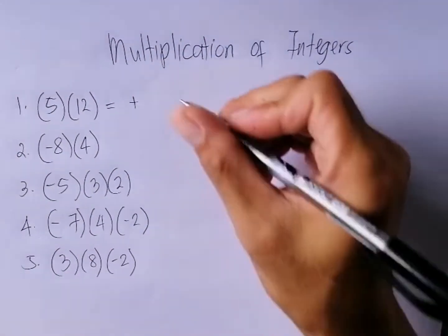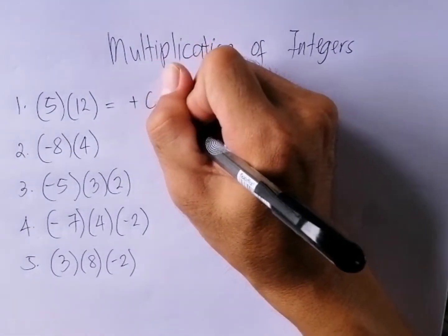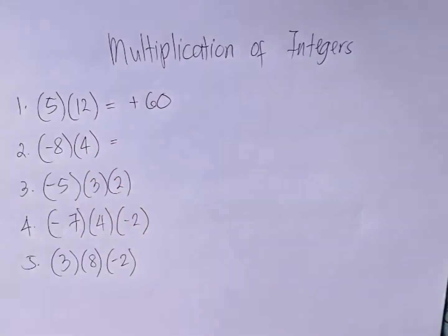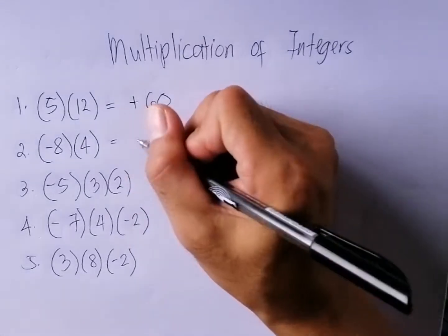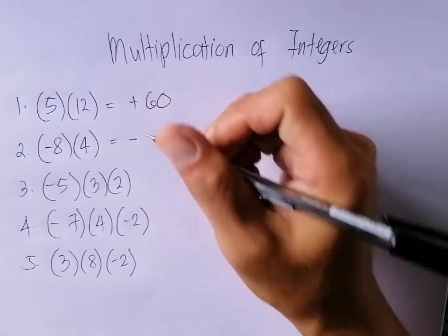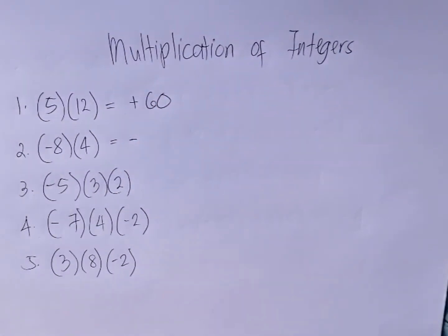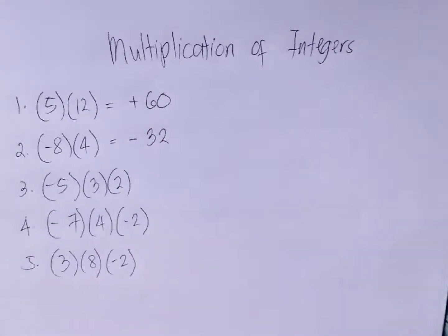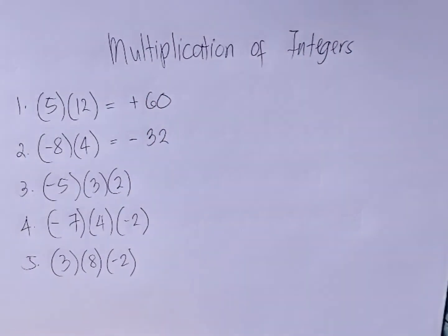Number two: negative eight times positive four. Negative times positive is equal to negative, then eight times four is equal to thirty-two. So the answer is negative thirty-two.